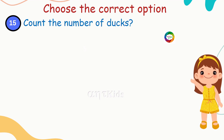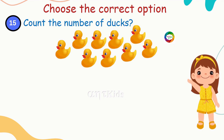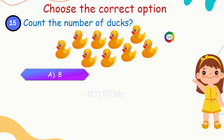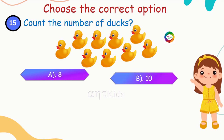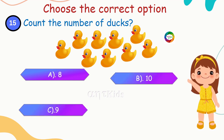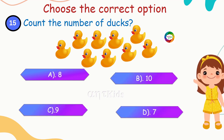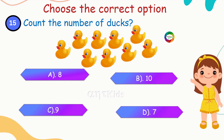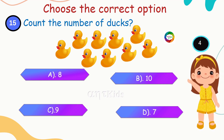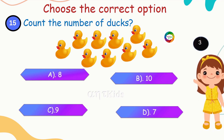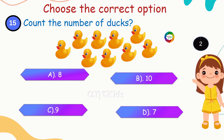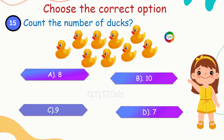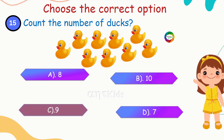Next question: count the number of ducks here. Options: eight ducks, nine ducks, seven ducks. Find out the answer. Yes, you're right — nine ducks are here.